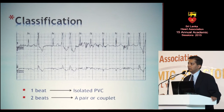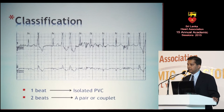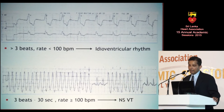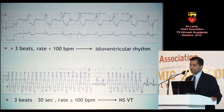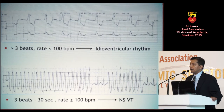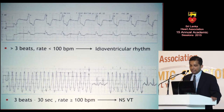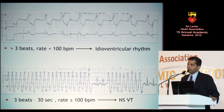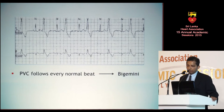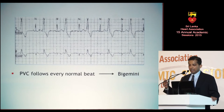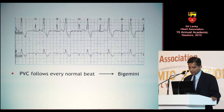For classification of PVCs, just so all of us use the same language: if it's one beat, we call it an isolated PVC. If two beats come in a row, it's a pair or a couplet. If three beats come at a rate of less than 100 beats per minute continuously, we call it idioventricular rhythm. If three PVCs come in a row at greater than 100 beats per minute for less than 30 seconds, it's non-sustained VT. If a PVC follows every normal beat, it's ventricular bigeminy; every second normal beat is trigeminy, then quadrigeminy, and so on.